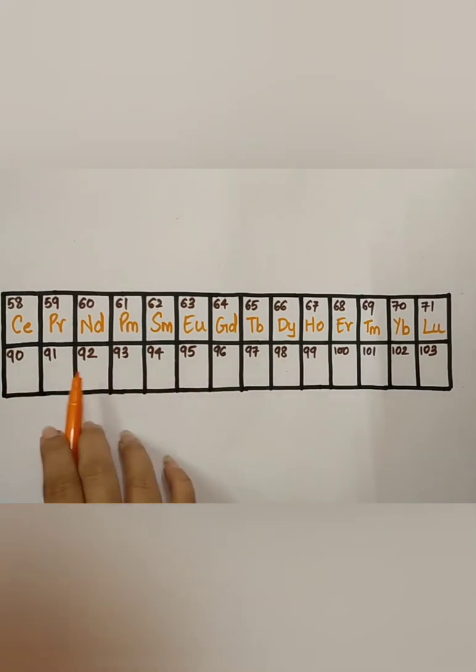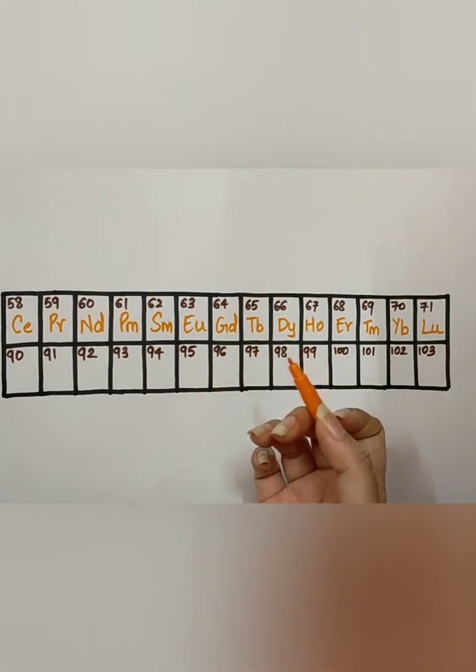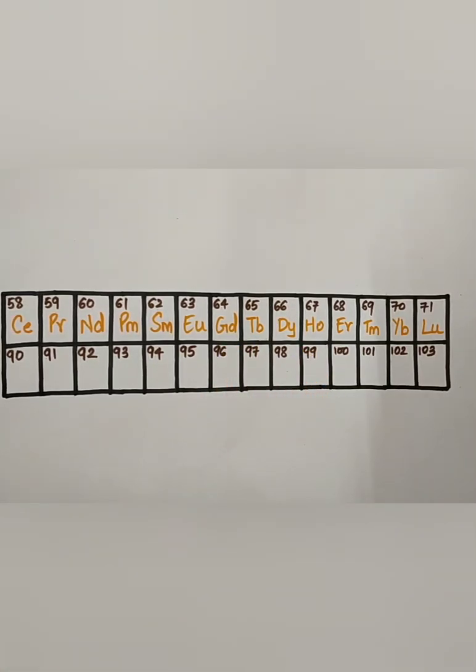Now, we are going to talk about 90 to 103 elements. Starting with the mnemonic. Okay, so this was in the 7th period, if you all remember. So, let us begin.